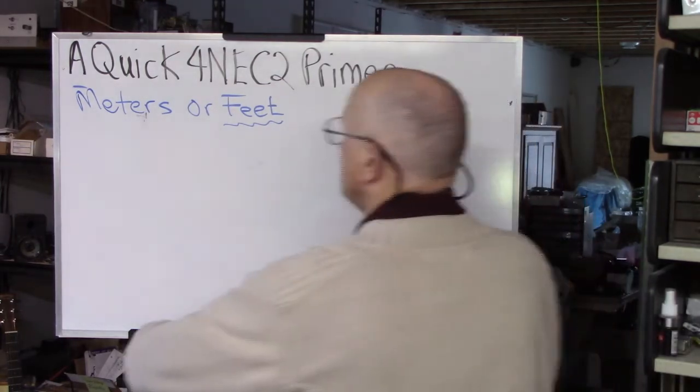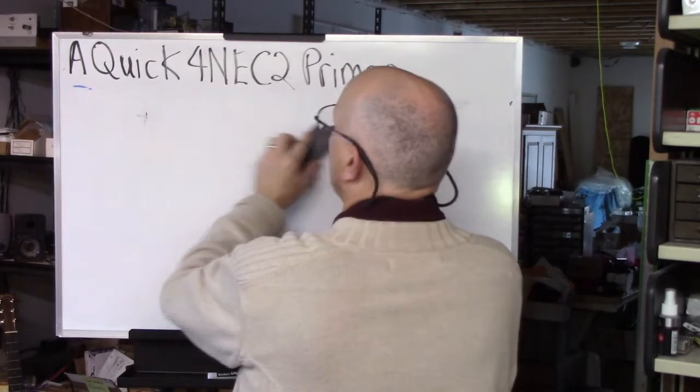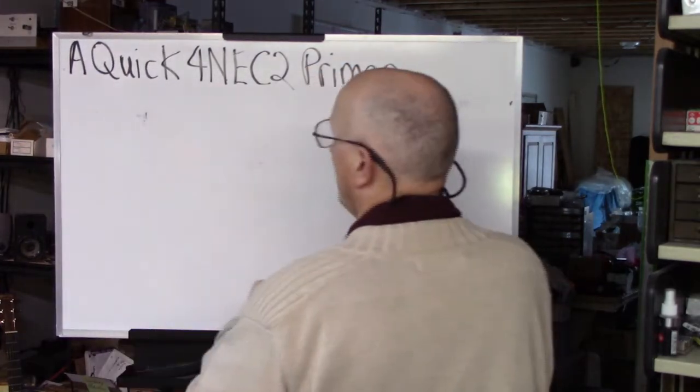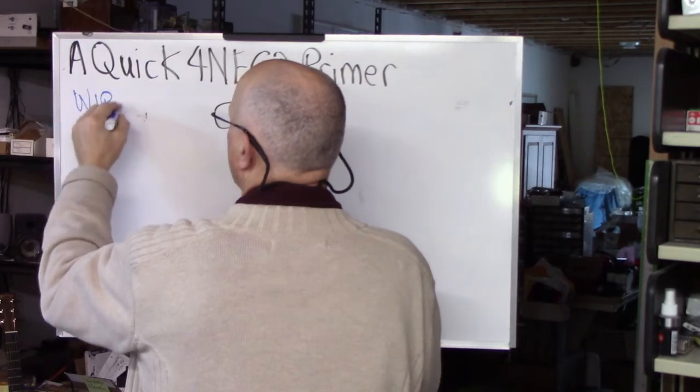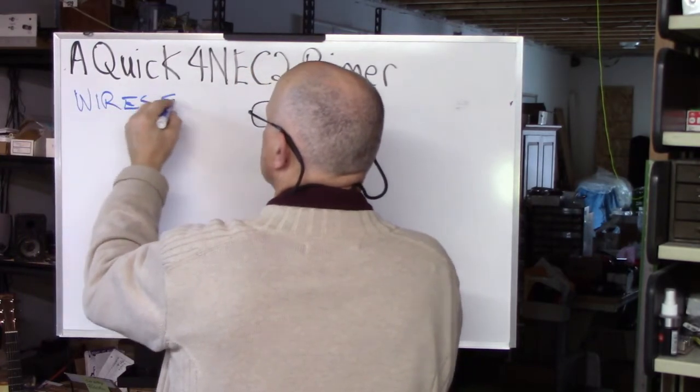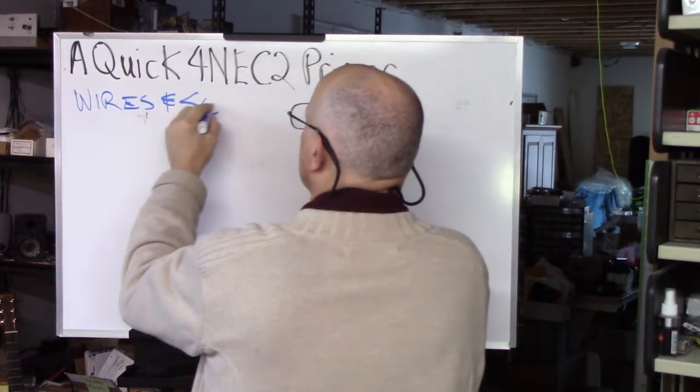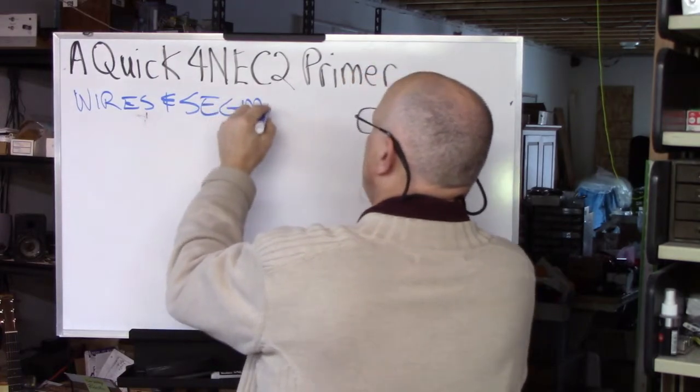Thirdly, and this is the part that people have the most problem with. Antennas are created with wires and segments. And this is confusing to some.